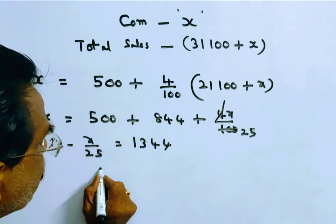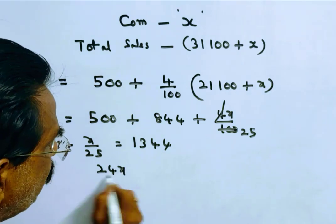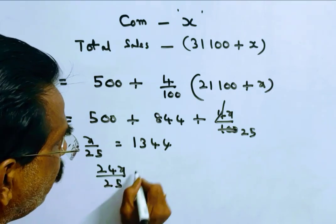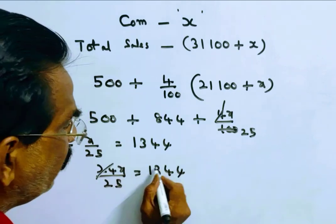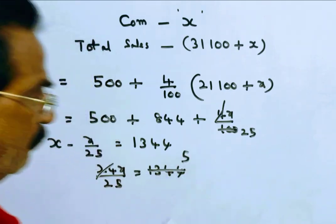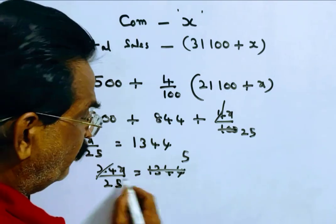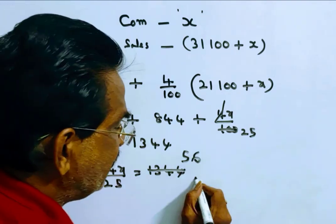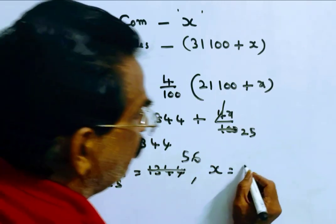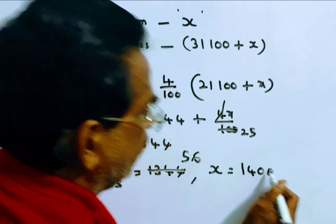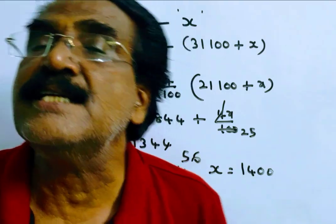Calculating: 24 times 5 is 120, 24 times 6 is 144. This gives X equals 1400. His commission is 1400.